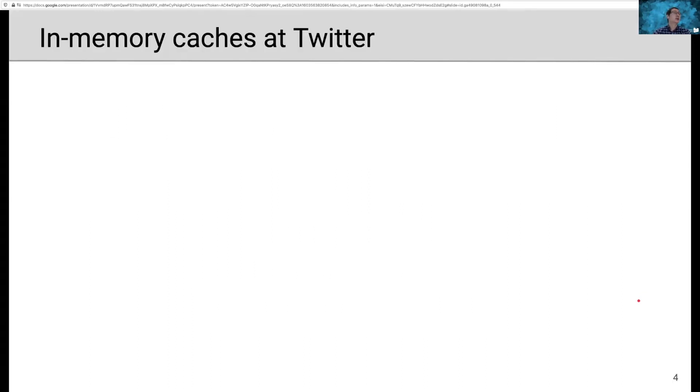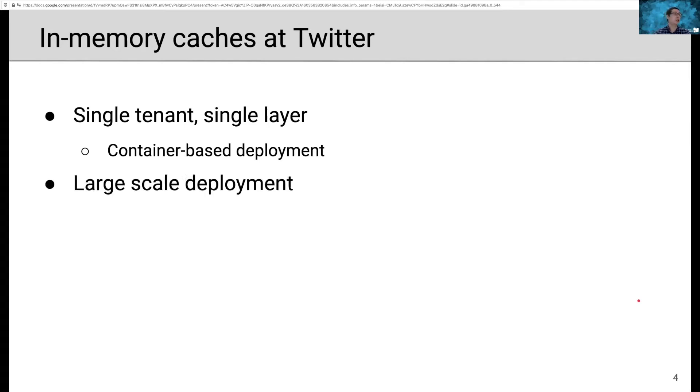First, let's talk about how in-memory caches are deployed at Twitter. Twitter deploys in-memory cache as a single tenant single layer of cache using container technology. So each cache cluster is deployed using containers, and each customer gets its own dedicated cache cluster. Here, a customer means a service at Twitter. Twitter operates one of the largest-scale cache deployments. It has hundreds of cache clusters, serves billions of requests per second, uses hundreds of terabytes for caching, with hundreds of thousands of CPU cores.